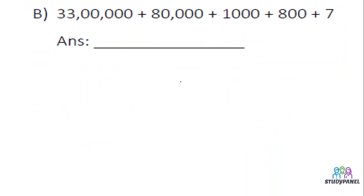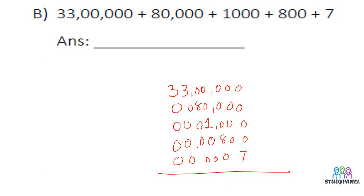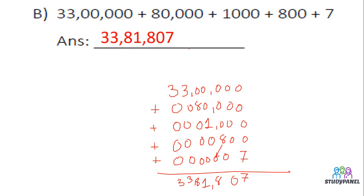Moving to the next question, we have to add. We will simply do it. 33,00,000, then 80,000, then 1,000, then 800, then 7. Adding: 7 in units, 0 in tens, 8 in hundreds, 1 in thousands, 8 in ten-thousands, 0 in lakhs, 3 and 3 in the higher places. Our answer is 33,81,807.